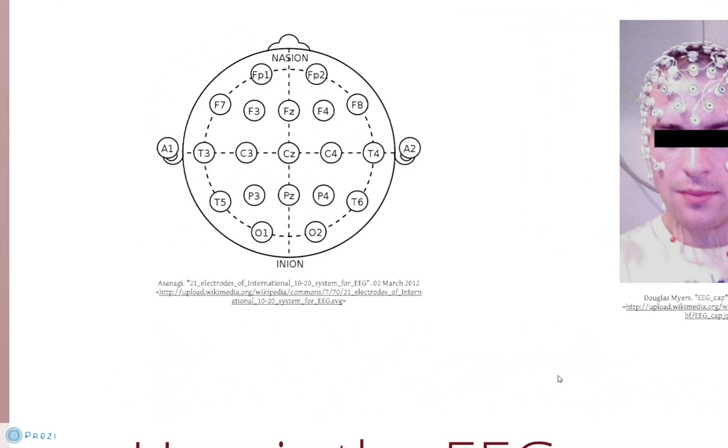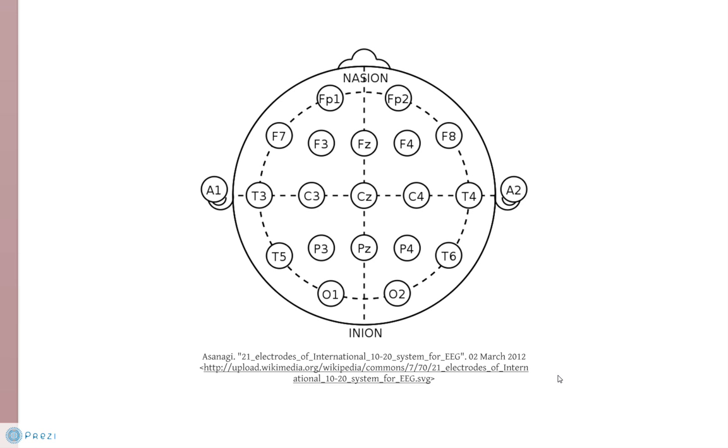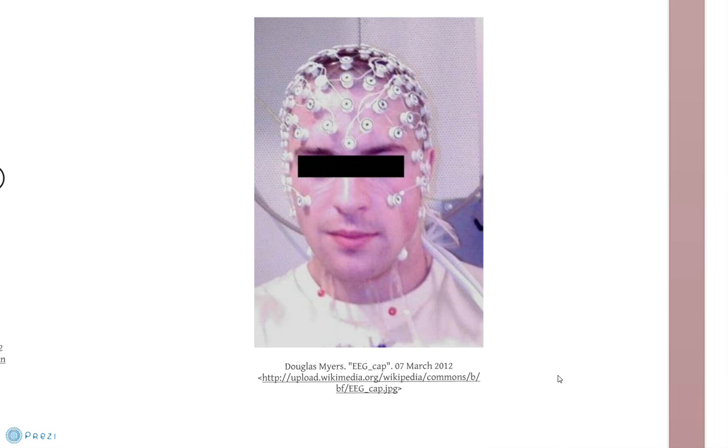This diagram shows the 10-20 system of electrode placement. The numbers refer to the distance from certain reference points on the head to ensure the placement is consistent across different studies. And this is what it looks like when all the electrodes are in place.